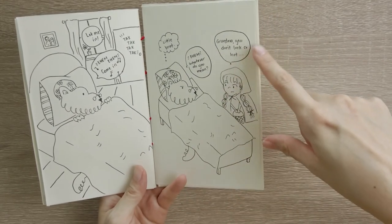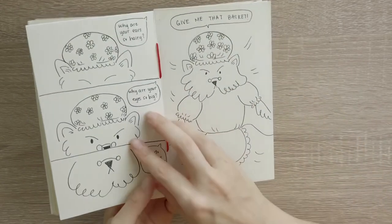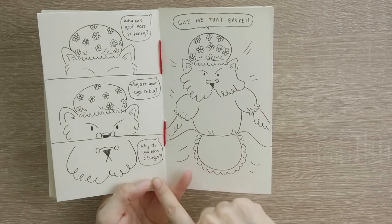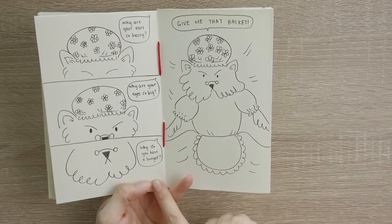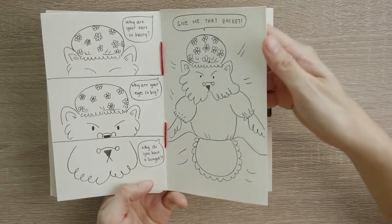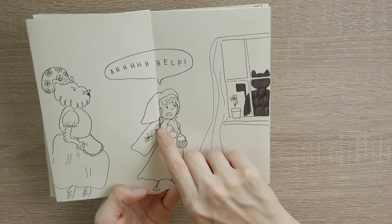And meanwhile the wolf is coercing grandma to give him the clothes and he stuffs her in the closet. Then he's ready in bed for Red to arrive. Red arrives and says grandma you don't look so good, whatever do you mean. And then we have that classic but with a little bit of a twist lines. And then finally the wolf gives up and bounces out of bed and demands that Red hands over the basket.